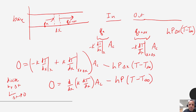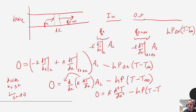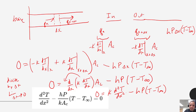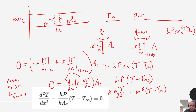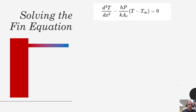If we have constant thermal conductivity we can pull K out, and we end up with zero equals K times the second derivative of temperature with respect to X squared minus H P times (T minus T_infinity). This is called the fin equation, and now let's look at how we're going to go about solving it.